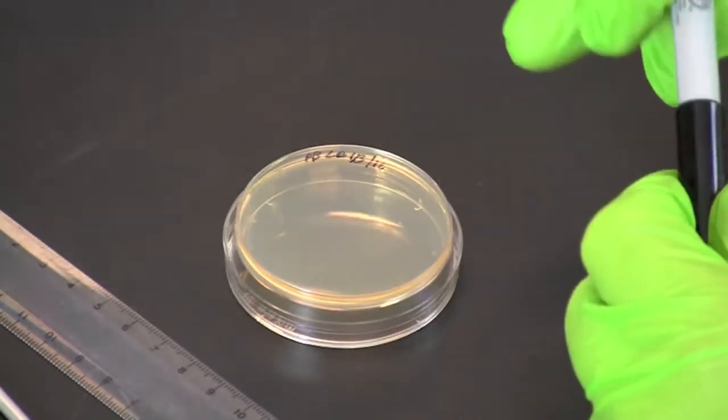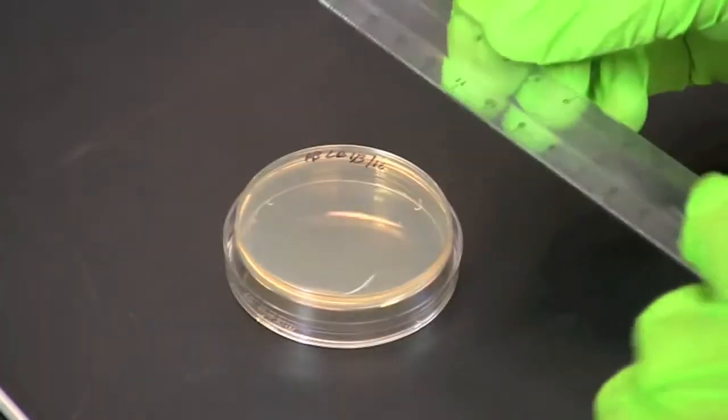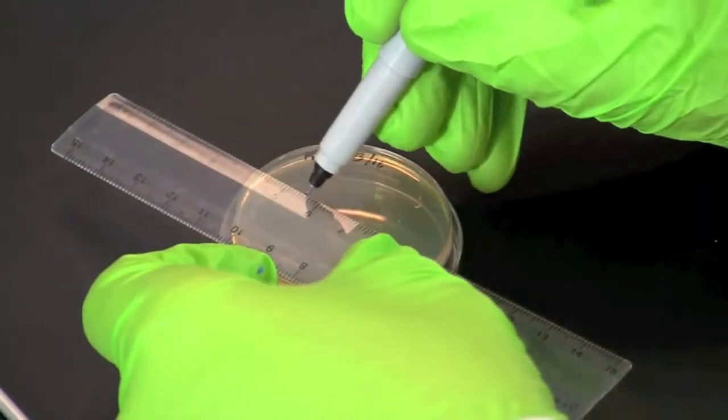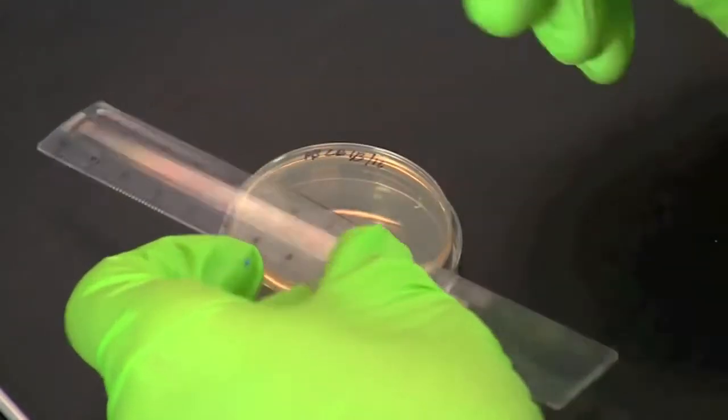Using a laboratory marking pen, divide the bottom of an LB agar plate into four quadrants by drawing two perpendicular lines that form a large X.